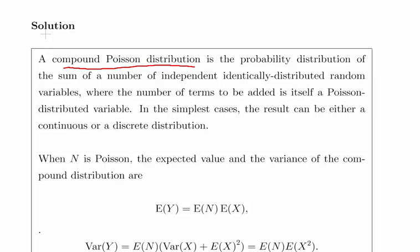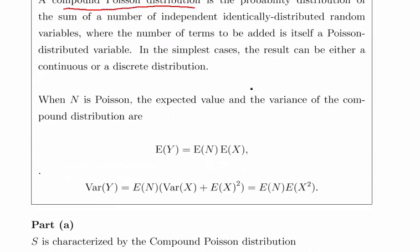There are compound distributions and compound Poisson distributions. With a compound Poisson distribution, there's a couple of extra things that you could use, for example, the expected value and the variance.